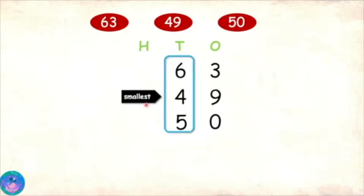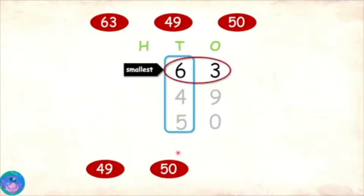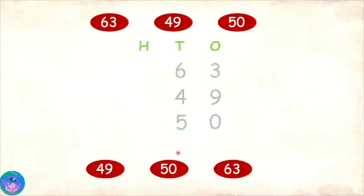Four is the smallest. That means that the number 49 is the smallest number and we will write it first. Then we will compare the remaining two numbers. Five is smaller than six. So the number 50 is the smallest out of these two. Let's write that number. And now we are left with only one and that number comes last.